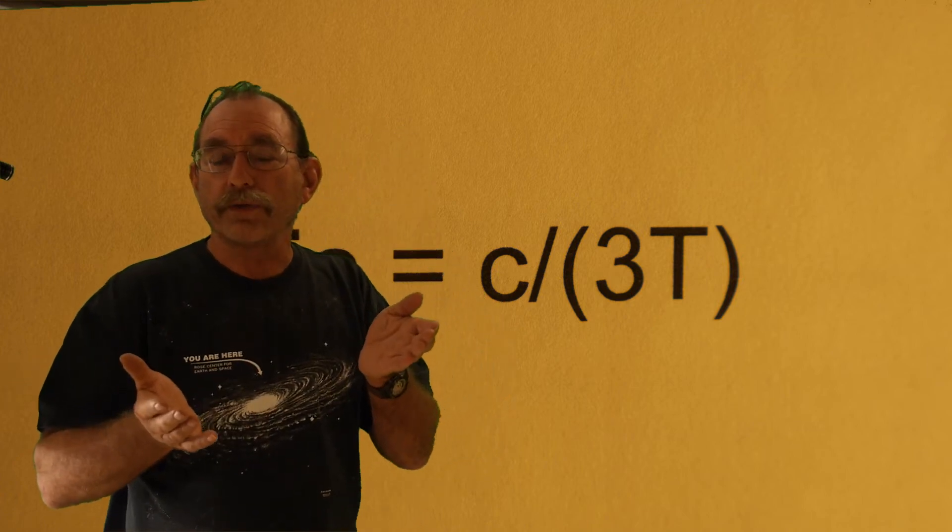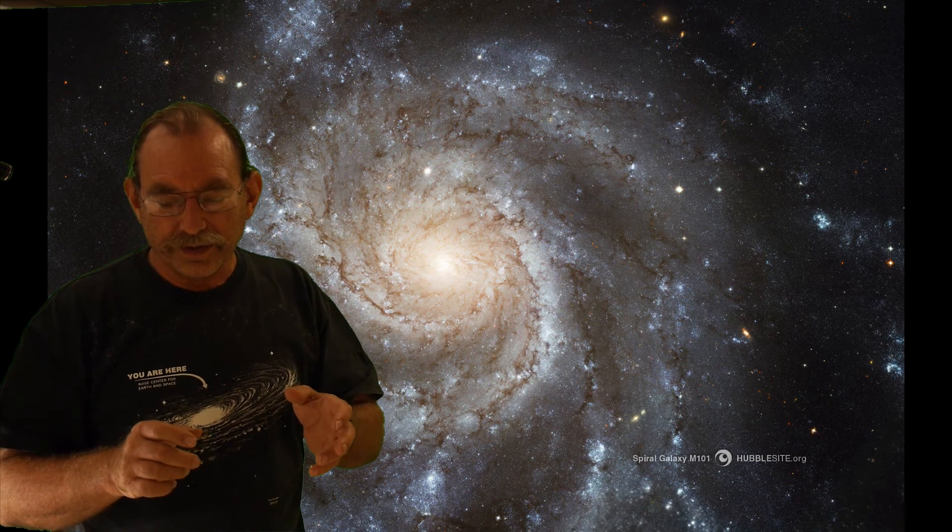When we do this, the velocity that we'd expect to see with galaxies, instead they're flat. Instead of getting much slower, they seem to be constant or relatively constant, more or less following a curve.